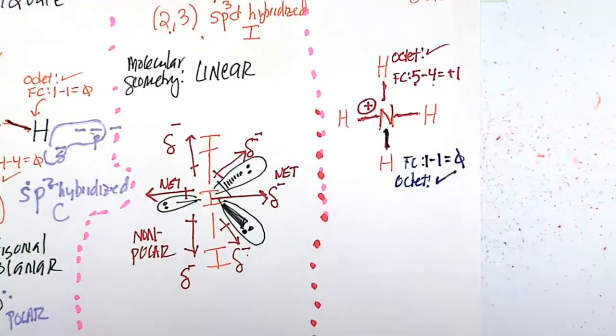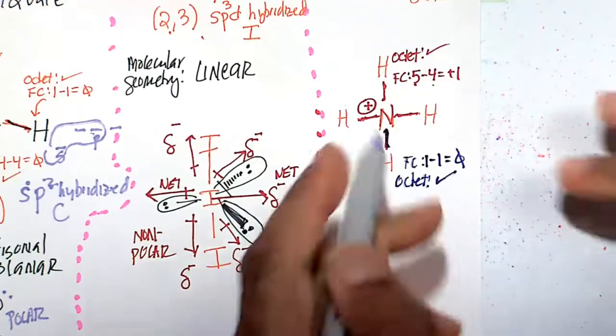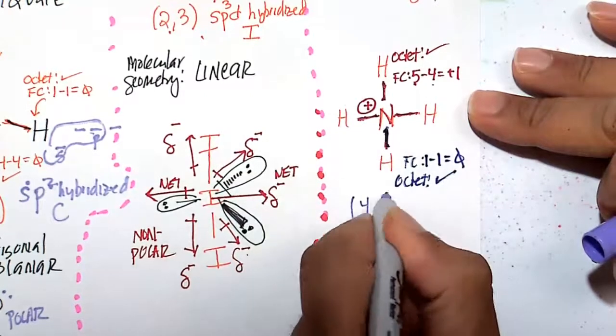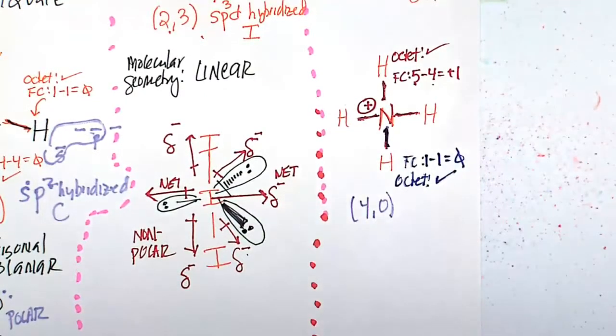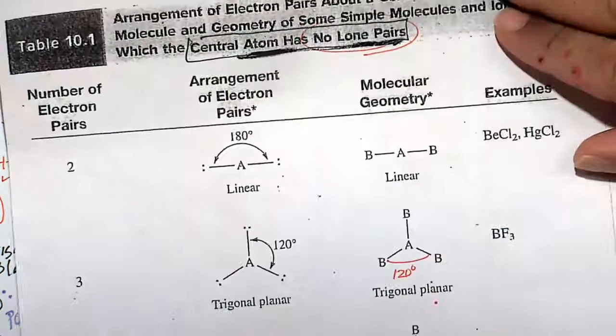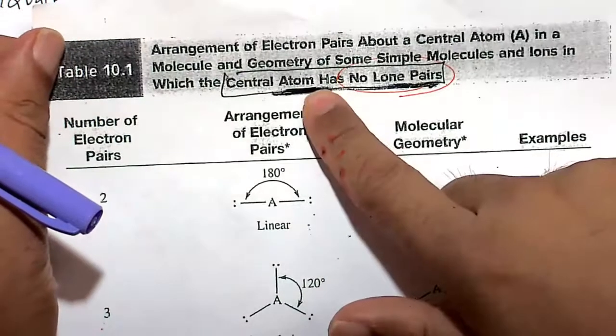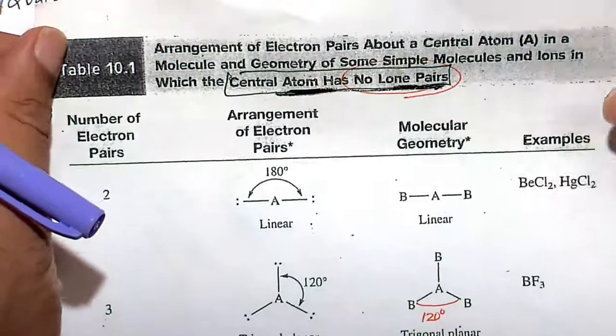So let's look at the geometry here. So 1, 2, 3, 4. 4 bonds and 0 lone pairs. We're going to use our table, or use the table if you're following, taking the class here or online. Use the table in which the central atom has no lone pairs.